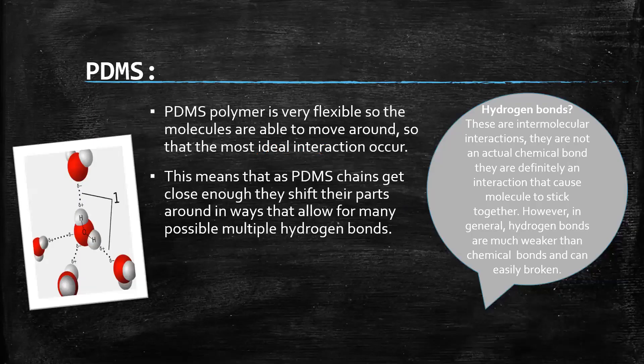Polydimethylsiloxane polymer is very flexible, so the molecules are able to move around so that the most ideal interaction occurs. This means that as PDMS chains get close enough, they shape around each other in a way that allows many possible multiple hydrogen bonds.